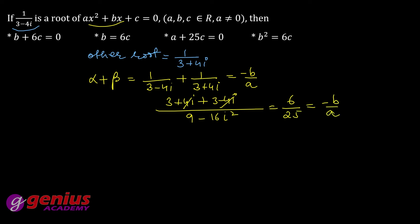Equation hai yagi, doosri hai alpha into beta. Alpha into beta kya hota hai? c by a. To one by three minus four iota multiply one by three plus four iota c by a. To one, a is ke minus b is ke, vohi aagaya ye, 25 ho jayega c by a. Yahan se a ki value nikal dijiye, 25c ho gaya.